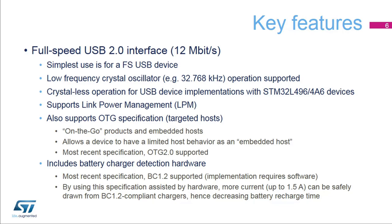In addition, the on-the-go or OTG function enables the implementation of an OTG product or an embedded host, both of which have the capacity to behave as a targeted host. The battery charger detection feature allows for increased current up to 1.5 amps to be drawn from BC 1.2 compliant chargers.